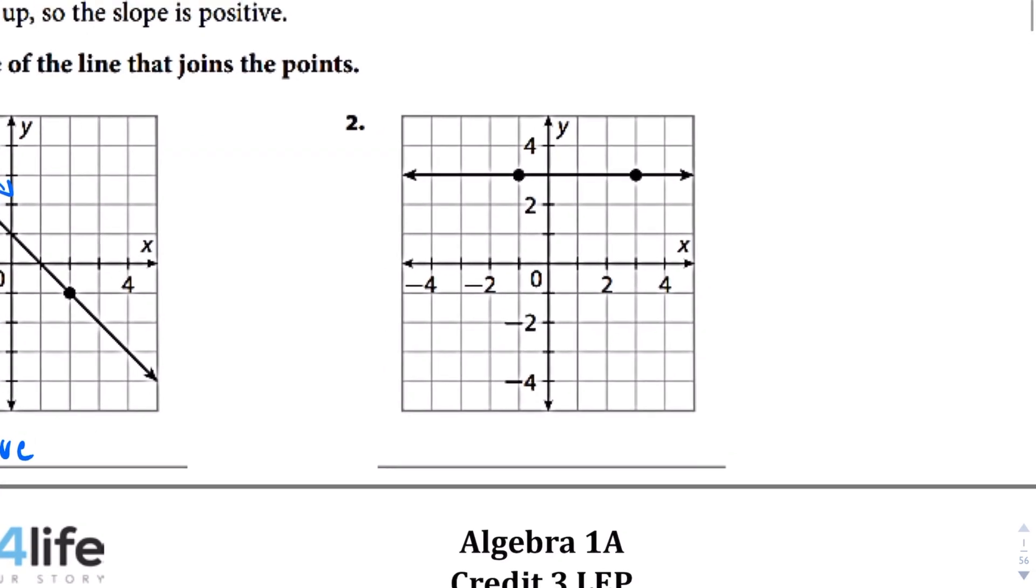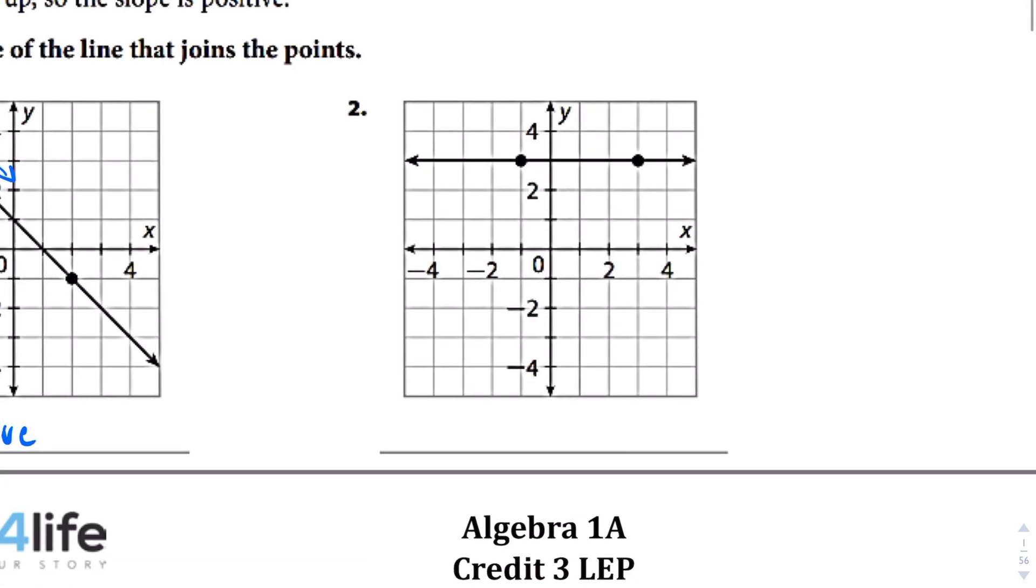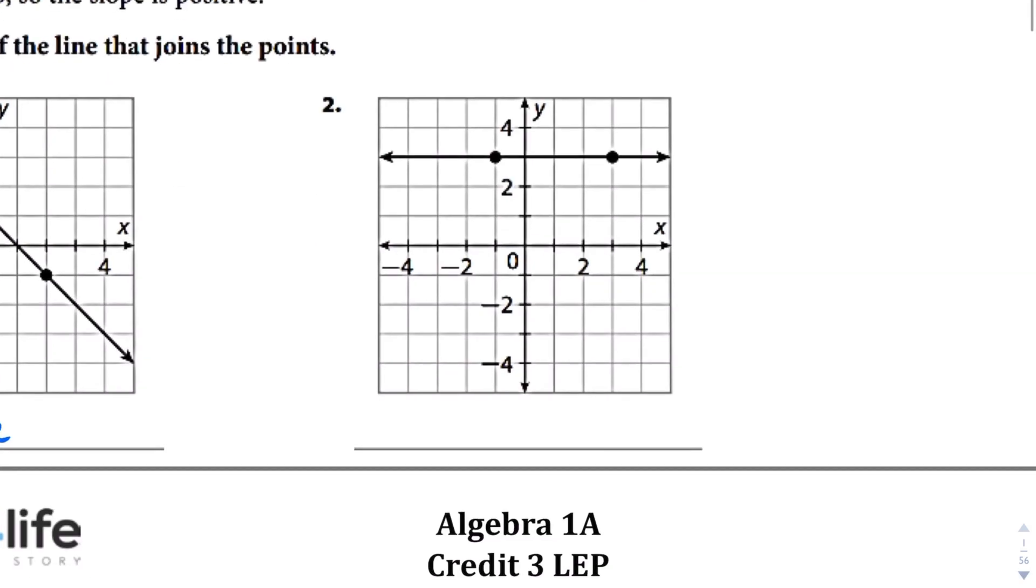Question number 2, we can see here that from left to right, let me just keep going around, from left to right, it's not going up or down, and it's not vertical, it's horizontal, so we have a zero slope.